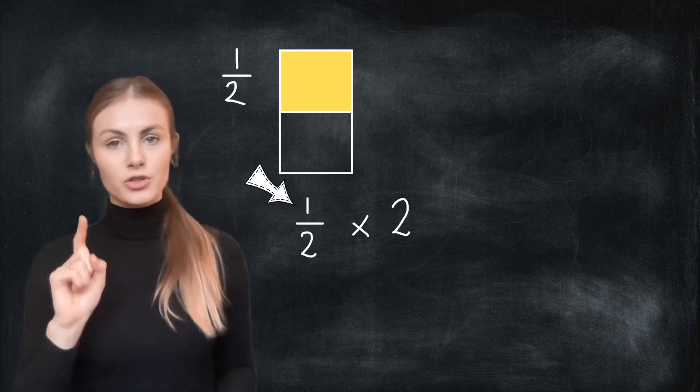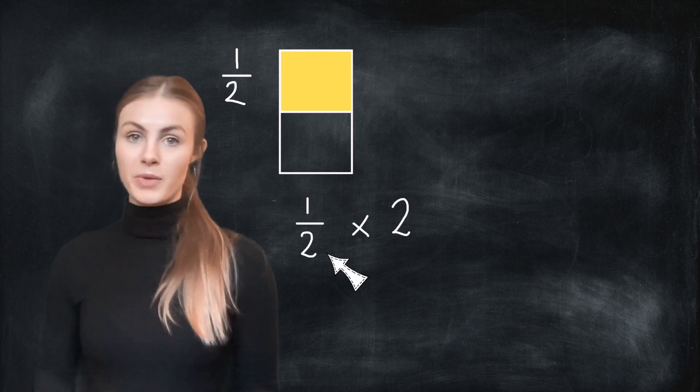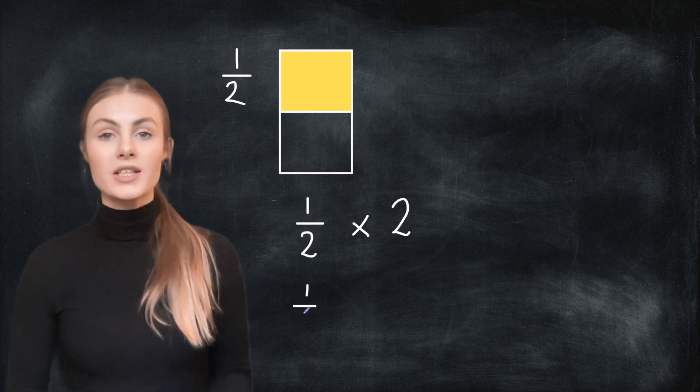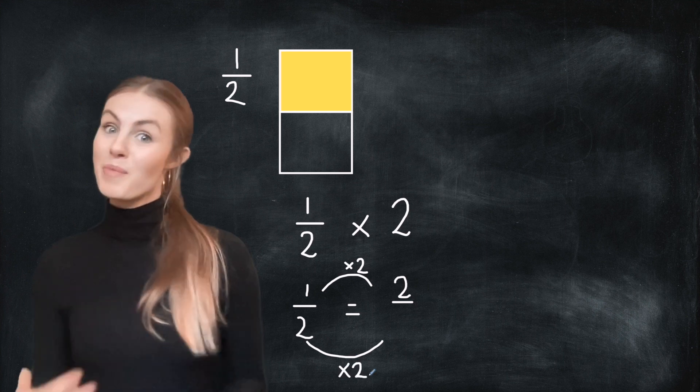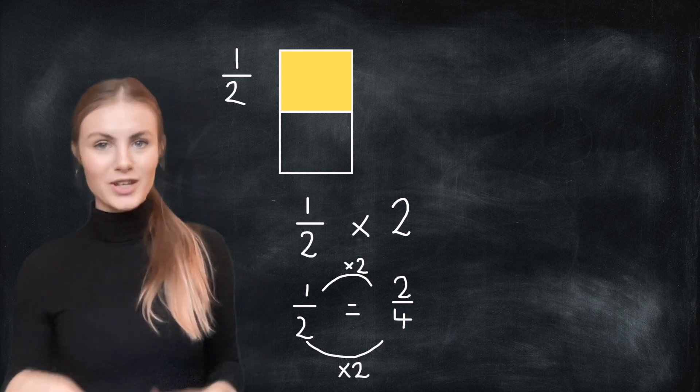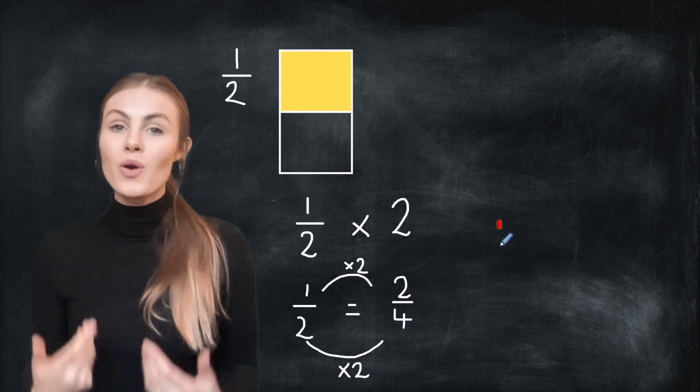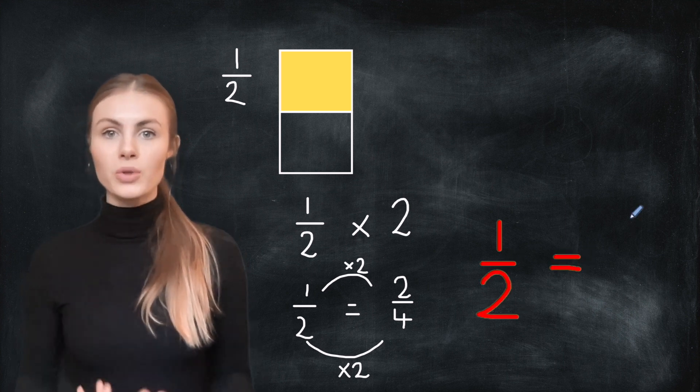I'm going to multiply my whole fraction by two. The rule is whatever I do to the top number, I have to do to the bottom number. So the first thing I need to do is multiply my top number. So one times two is two. Then I need to multiply my bottom number. So two times two is four. I can now see that my equivalent fraction is two over four or two quarters.